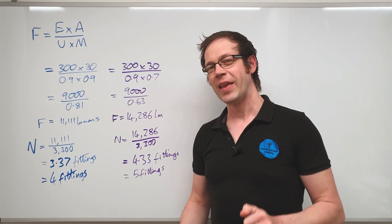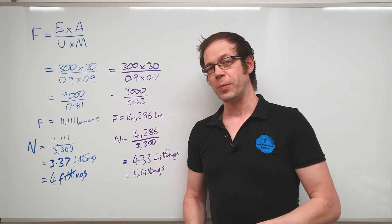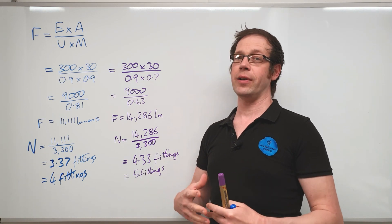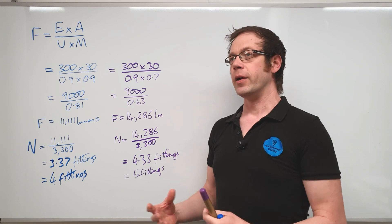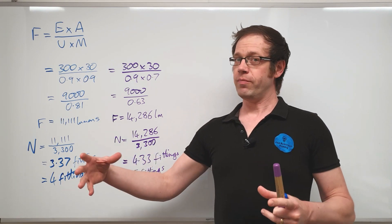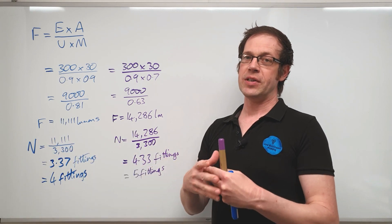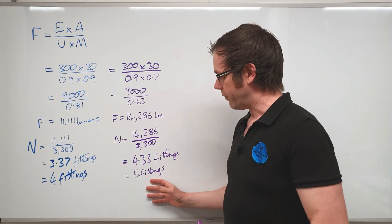However, in the real world this becomes a little bit of a challenge because five fittings within a given room doesn't necessarily space very nicely unless you've got a very long thin room and you can just have all the lights running down the center and casting a reasonable spread of light sideways.